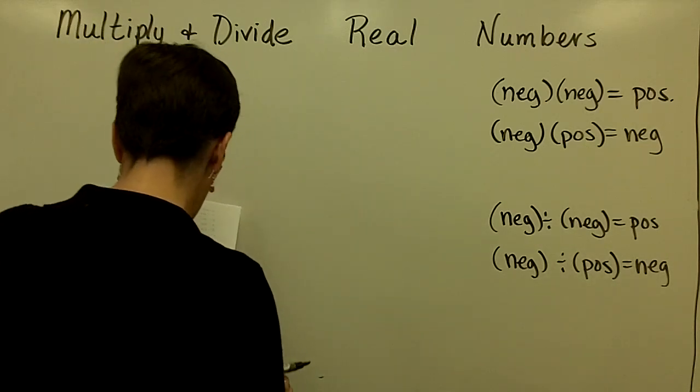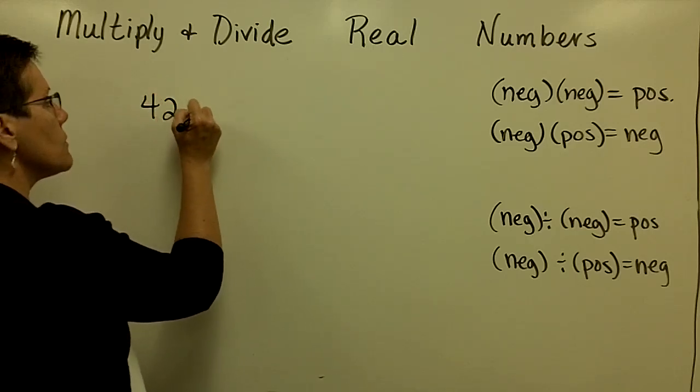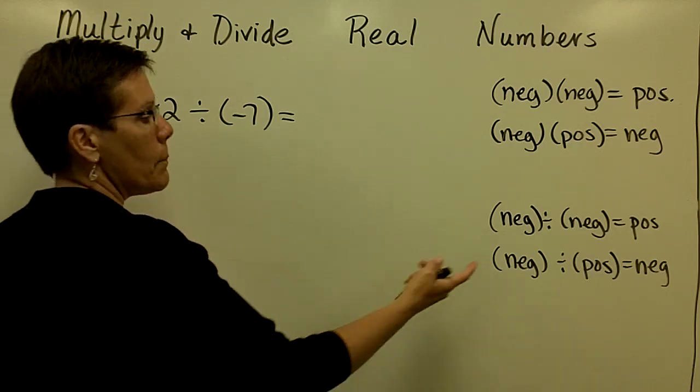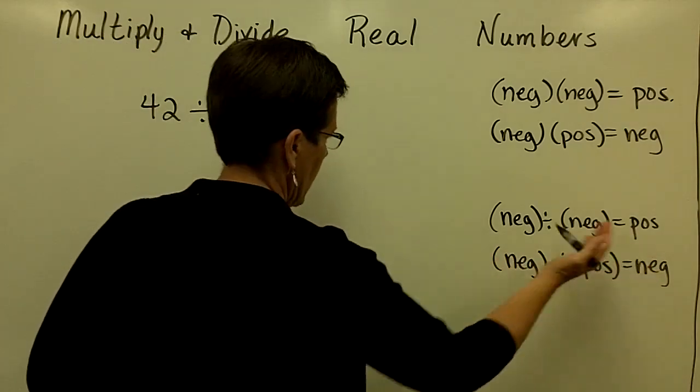So if I were to write and ask you to tell me what 42 divided by a negative 7 is, you would tell me that a positive divided by a negative is a negative answer.